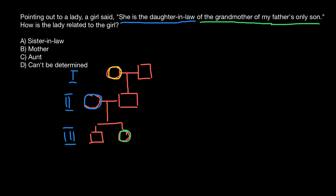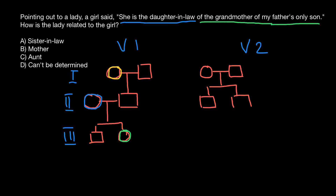This lady is going to be the mother of this girl. So this is one variant of the solution. Many people would fall into the trap that there is only one variant, but actually there are two variants. In the second variant, we start with one couple again, but this time this couple would have two sons. One son is married and another son is also married.